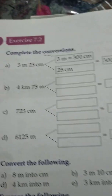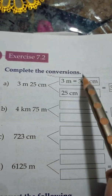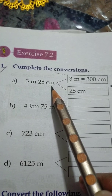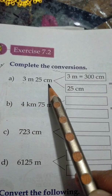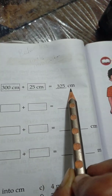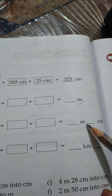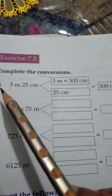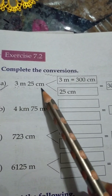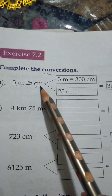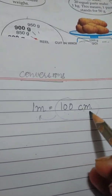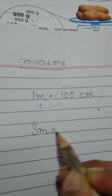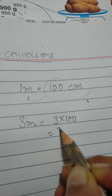In sum number 1, we have to complete the conversions. Sum number 1 is: 3 meter 25 centimeter. We have to write the answer in centimeter, in meters, in meter and centimeter, and in kilometer and meter — different types of units for different parts. The first sum is already done but I am going to explain it. 3 meter 25 centimeters — as we already know, 1 meter equals 100 centimeters, so 3 meter equals 3 multiplied by 100, which is 300 centimeters.